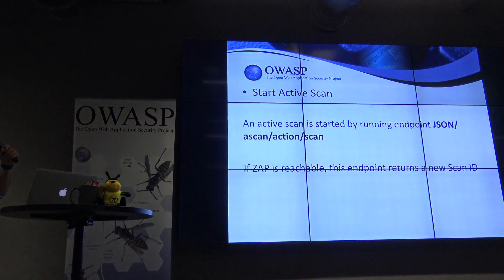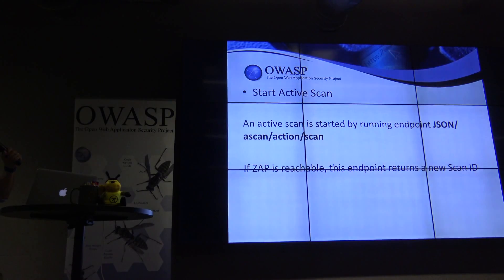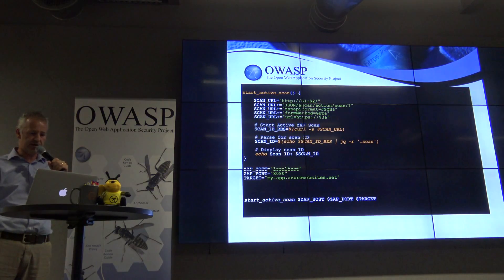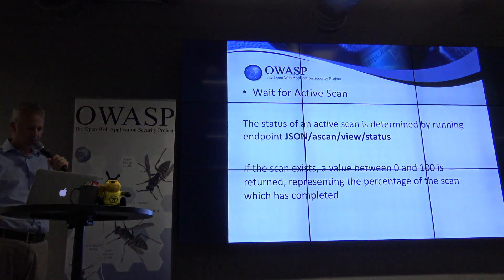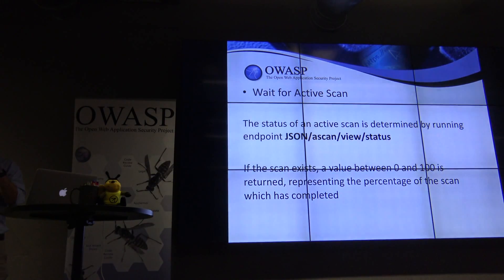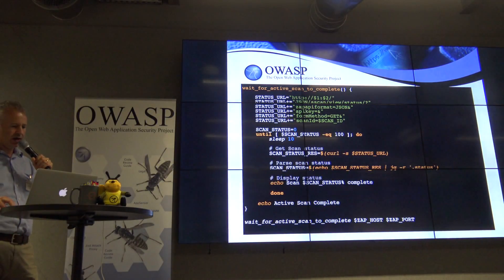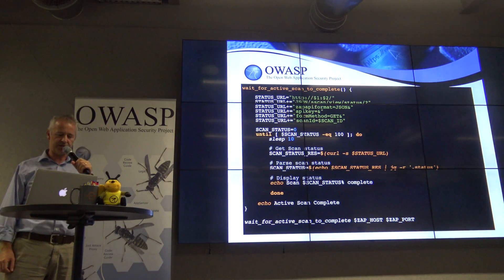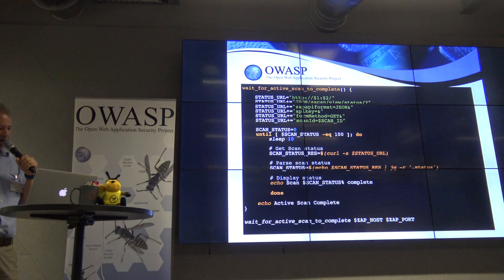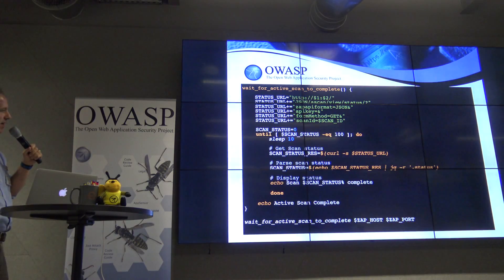We then start our active scan by hitting this endpoint. If successful, we get a ScanID back, and this is the Bash script that executes that for us. We also have to wait for the active scan — in the default setting, an active scan may take 5 to 10 minutes, so you do have to wait for it, otherwise your build will break. This tool determines when the active scan is complete, and we wait to make sure it's 100% complete and all active scanning is done.